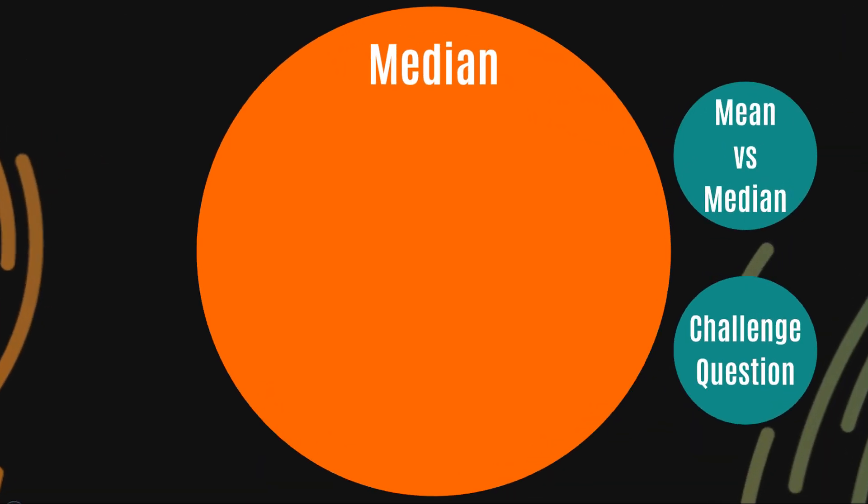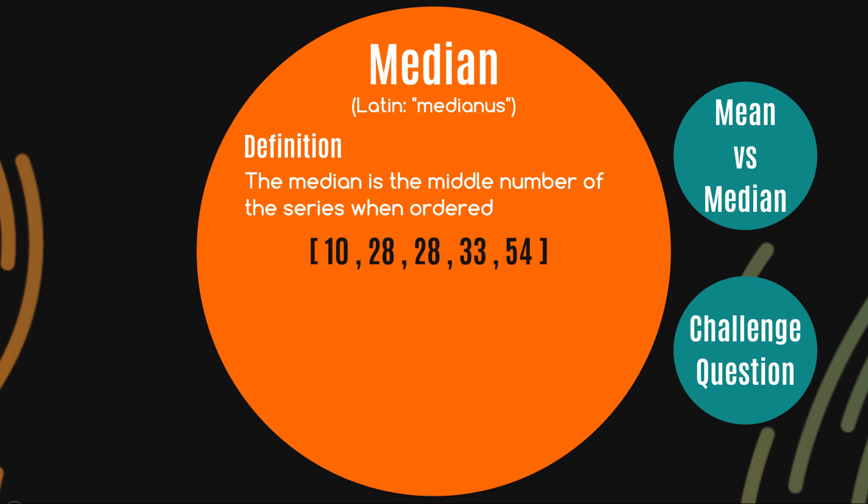Okay, so here we go. Now the word median stems from the Latin medianus, which of course means the middle of one's anus. Now the official definition is the median is the middle number of a series when ordered. And yes, I did just say that, but hey, it's my video. Here's the series: 10, 28, 28, 33, and 54.